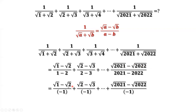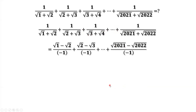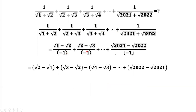Check the denominators: 1 minus 2 is negative 1; 2 minus 3 is negative 1; 3 minus 4 is negative 1; and 2021 minus 2022 is also negative 1. We can carry this negative 1 to the numerator. The numerators then become: square root of 2 minus square root of 1; square root of 3 minus square root of 2; and so on up to square root of 2022 minus square root of 2021. The denominator is now 1.